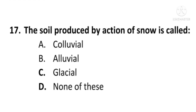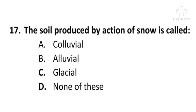Next question: The soil produced by the action of snow is called — A) Alluvial, B) Aeolian, C) Glacial, or D) None of these. The correct option is C, Glacial. The soil produced by the action of snow is called glacial soil; C is the correct option.